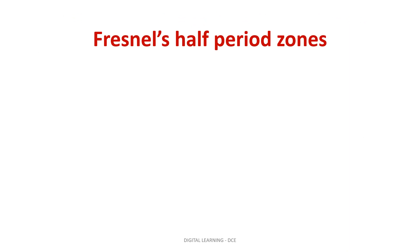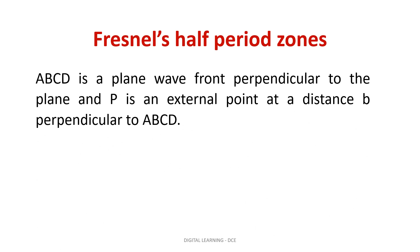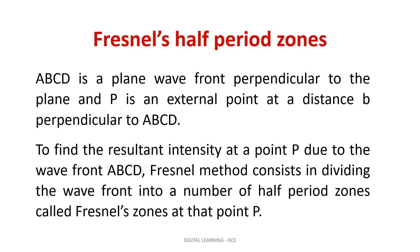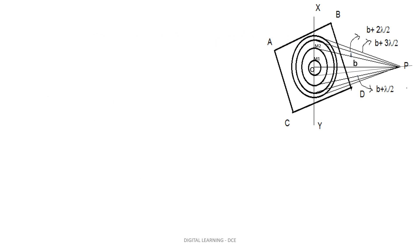Now let us see how to make Fresnel's half period zones. First, we take a plane wavefront ABCD and an external point P at a distance B perpendicular to the wavefront ABCD. Next, the wavefront is divided into a number of half period zones at point P, so that we can calculate the resultant intensity at P due to the wavefront ABCD.